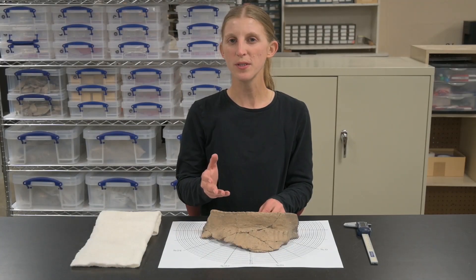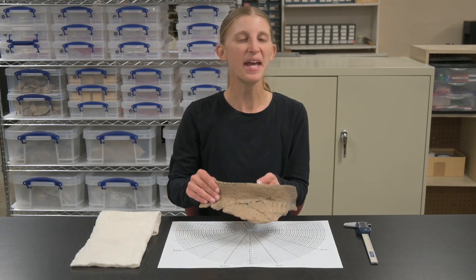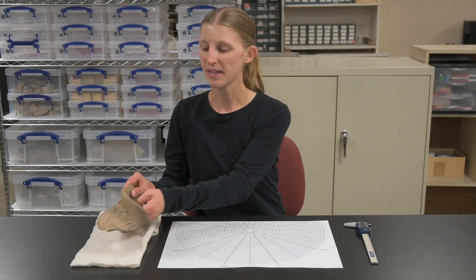With a few simple tools and accurate measurements, we can start with a rim sherd and end with a rim radius estimate that helps us describe the vessel and interpret what people used it for and why.